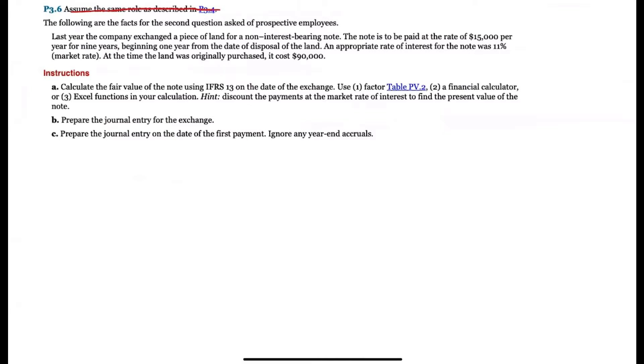Assume the same role as in problem 3.4, though you don't need anything from 3.4 to do this. Last year, a company exchanged a piece of land for a note. The note is $15,000 per year for nine years, beginning one year from the date of disposal, which is basically one year from now. That tells you end mode using 11% interest and a cost of $90,000.